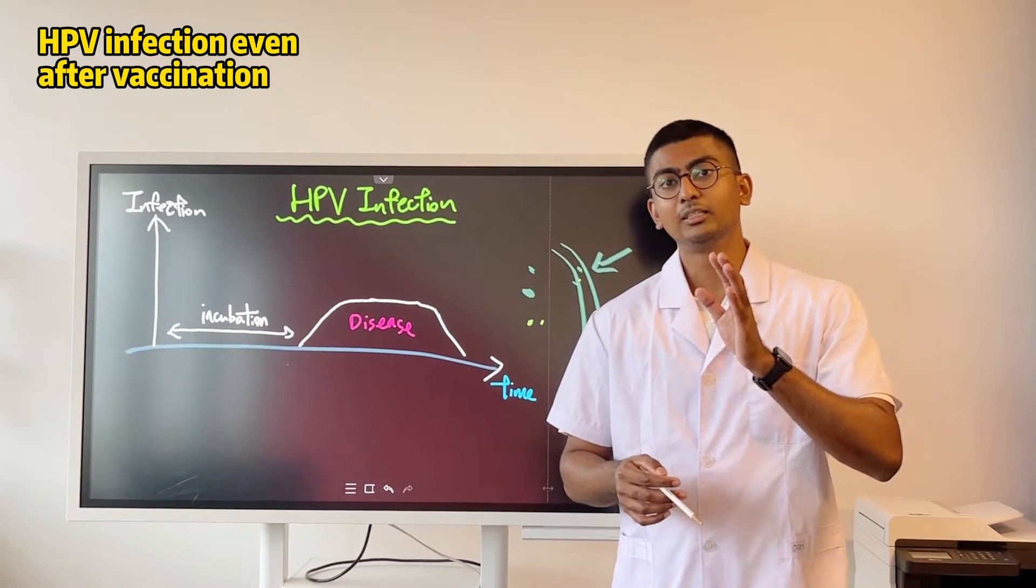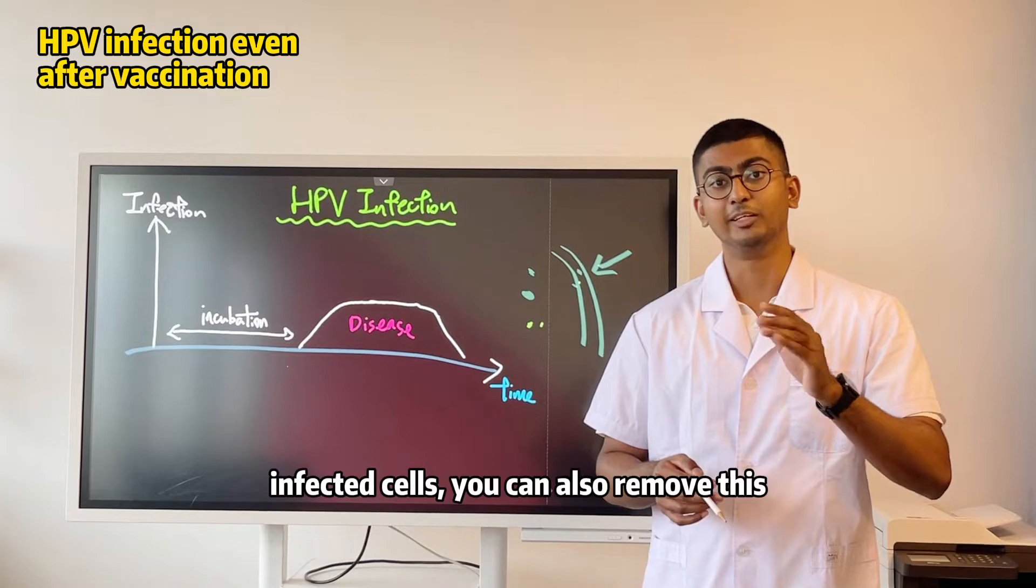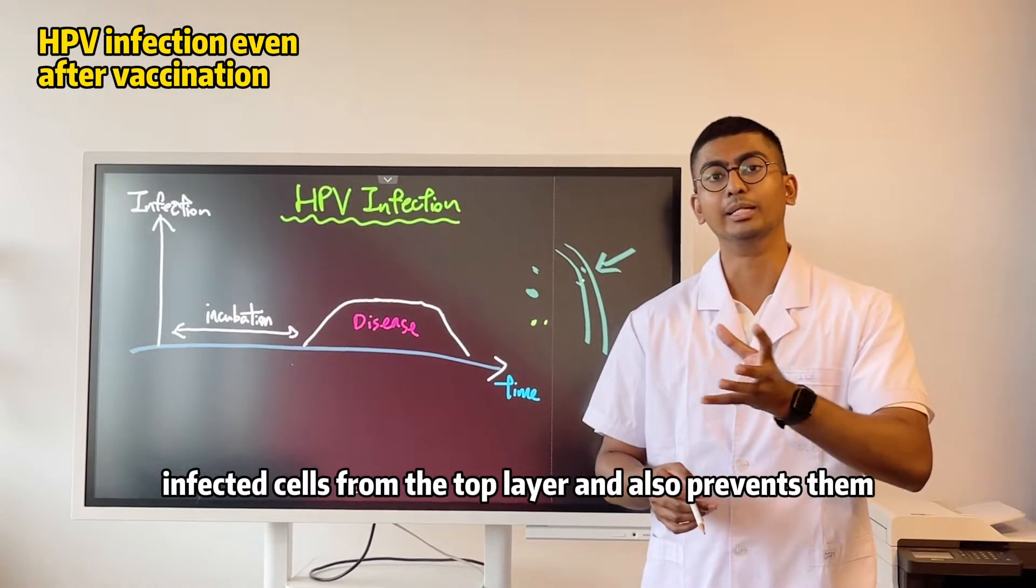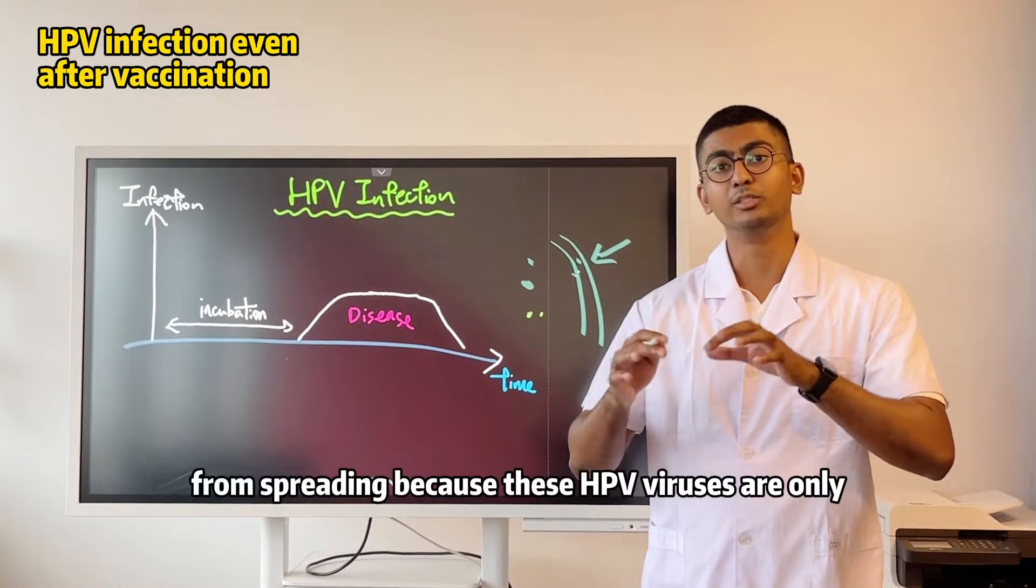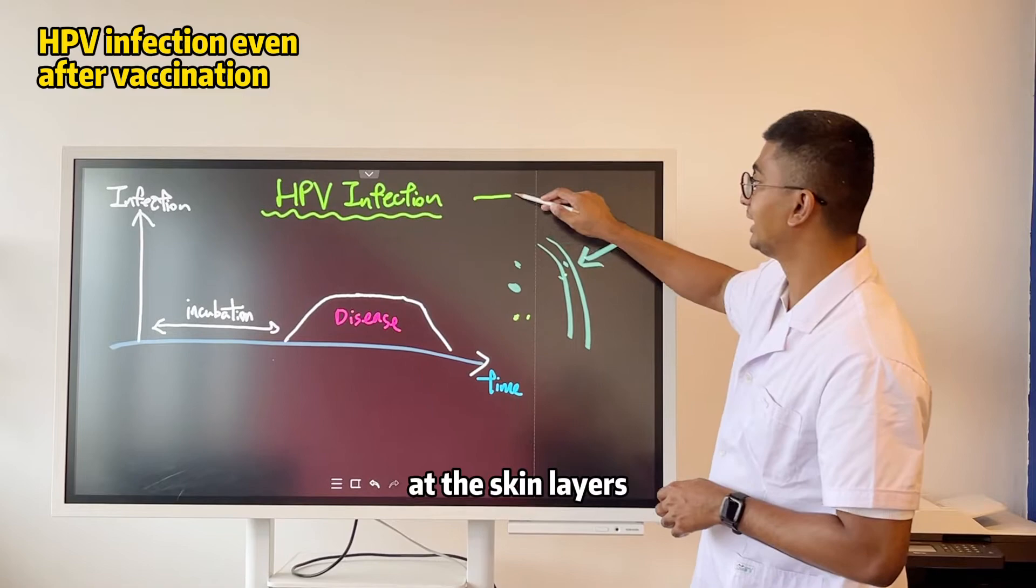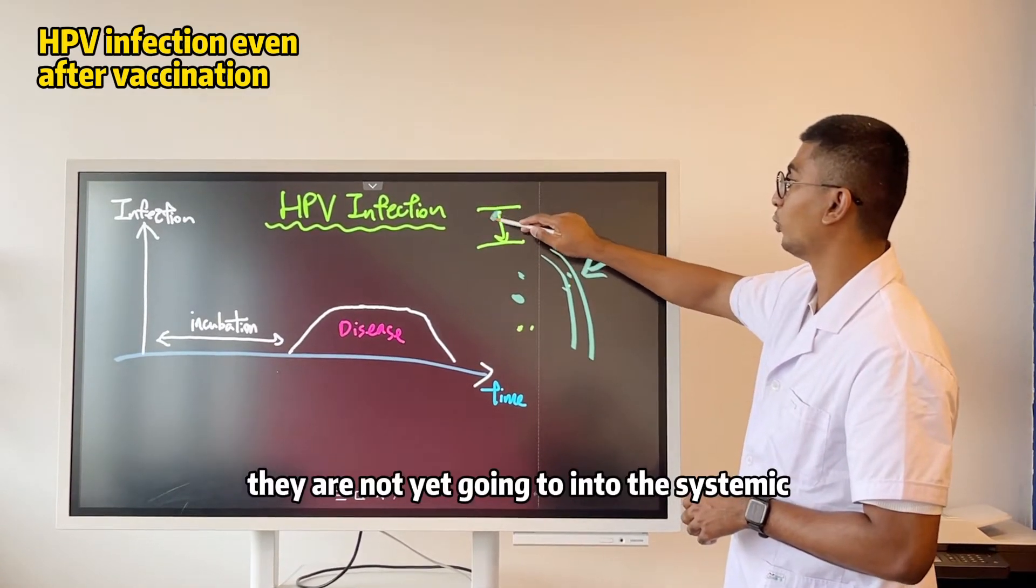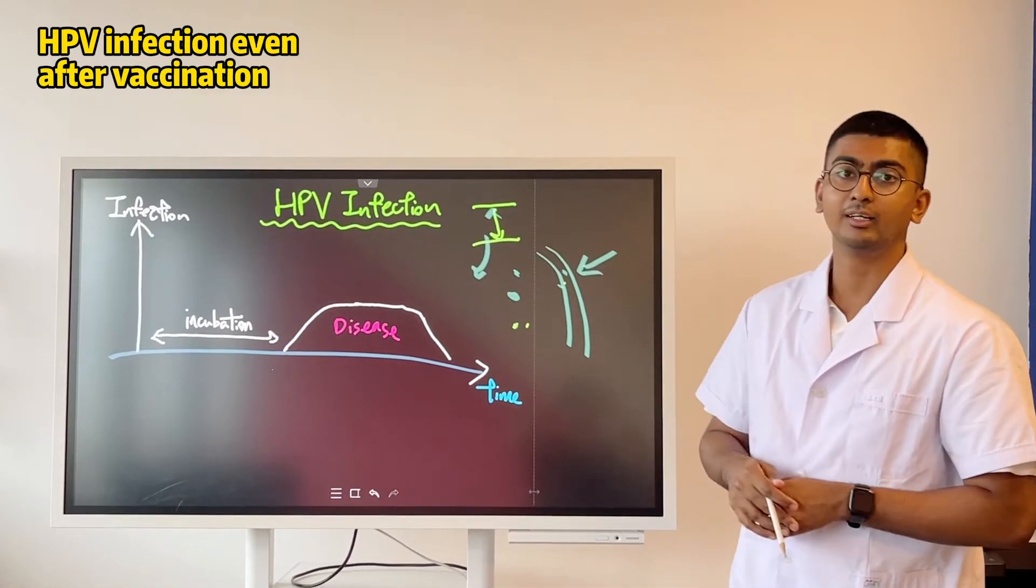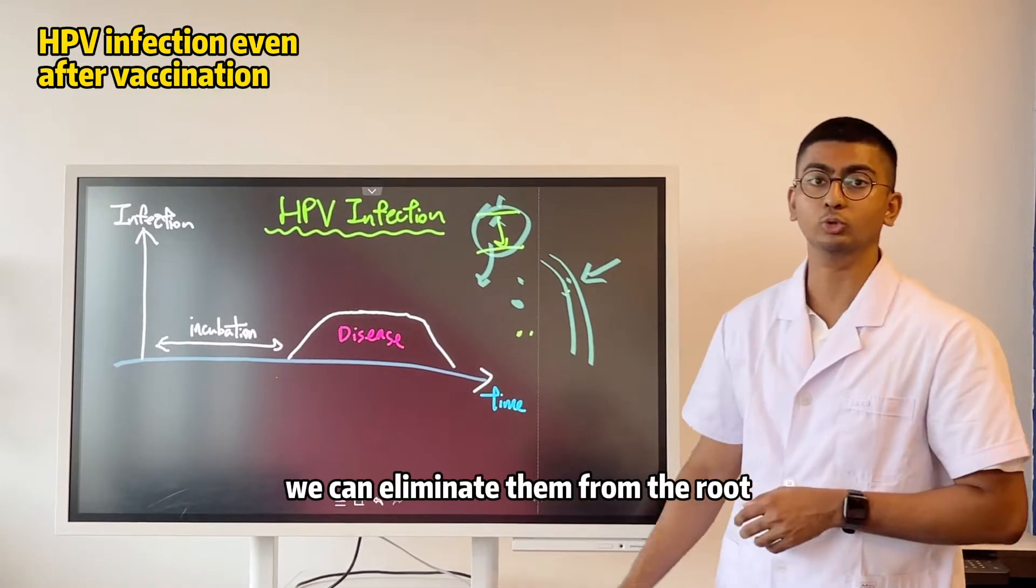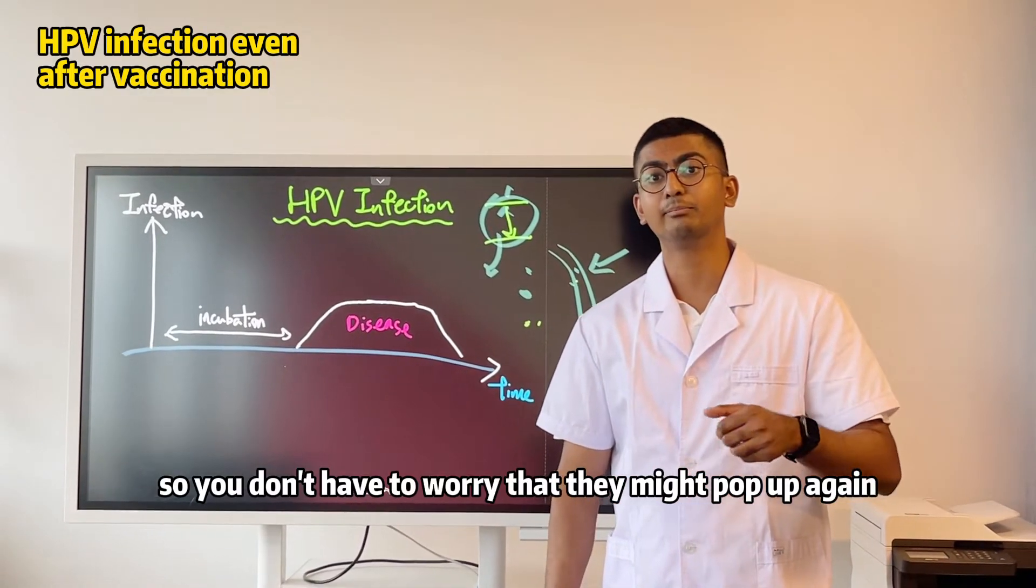And this not only kills the infected cells, it can also remove these infected cells from the top layer. And it also prevents them from spreading, because these HPV viruses are only at the skin layers. They are not yet going through into the systemic cardiovascular system. So when you apply it, you can eliminate them from the root, so you don't have to worry that they might pop up again.